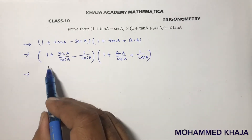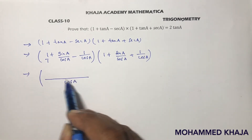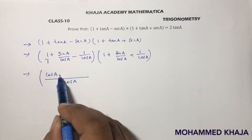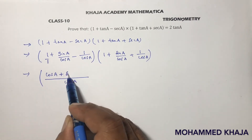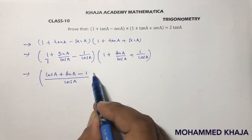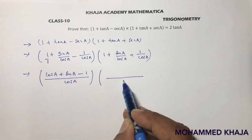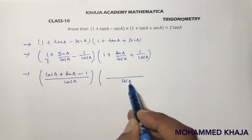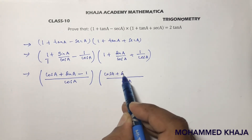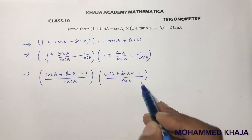Now, taking the LCM as cos a for each bracket: the first bracket becomes (cos a + sin a - 1) / cos a, and the second bracket becomes (cos a + sin a + 1) / cos a.